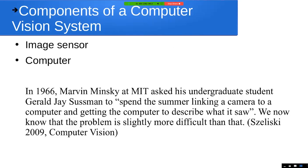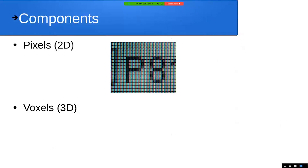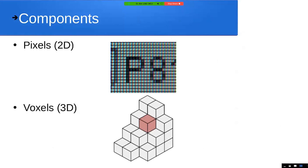Minsky basically asked one of his undergrad students to spend the summer hooking up a camera to a computer and seeing if the computer could describe what it saw. As we can imagine, it wasn't as easy as it sounds. What we see on the left, a computer sees as a bunch of digital points with certain numbers — these are pixels in 2D, and voxels in 3D, which is basically like pixels but in three-dimensional space.